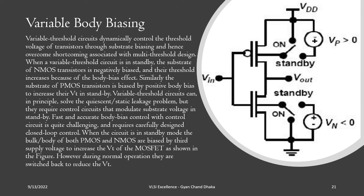The disadvantage of higher VT transistors is that they will be slow. That is why we tend to go with low VT transistors, where the low VT transistor is faster. So here we have designed our circuit carefully: whenever the circuit is in standby mode, we apply body biasing; otherwise, we do not. This switch is on whenever the circuit is in standby mode. In standby mode, the transistors become high VT transistors, meaning the leakage current through the transistor will be less. When the circuit is in functional mode and needs to operate at higher speed, we switch off this switch and it becomes a low VT transistor. This is a kind of variable body biasing where we either increase or decrease the threshold voltage.